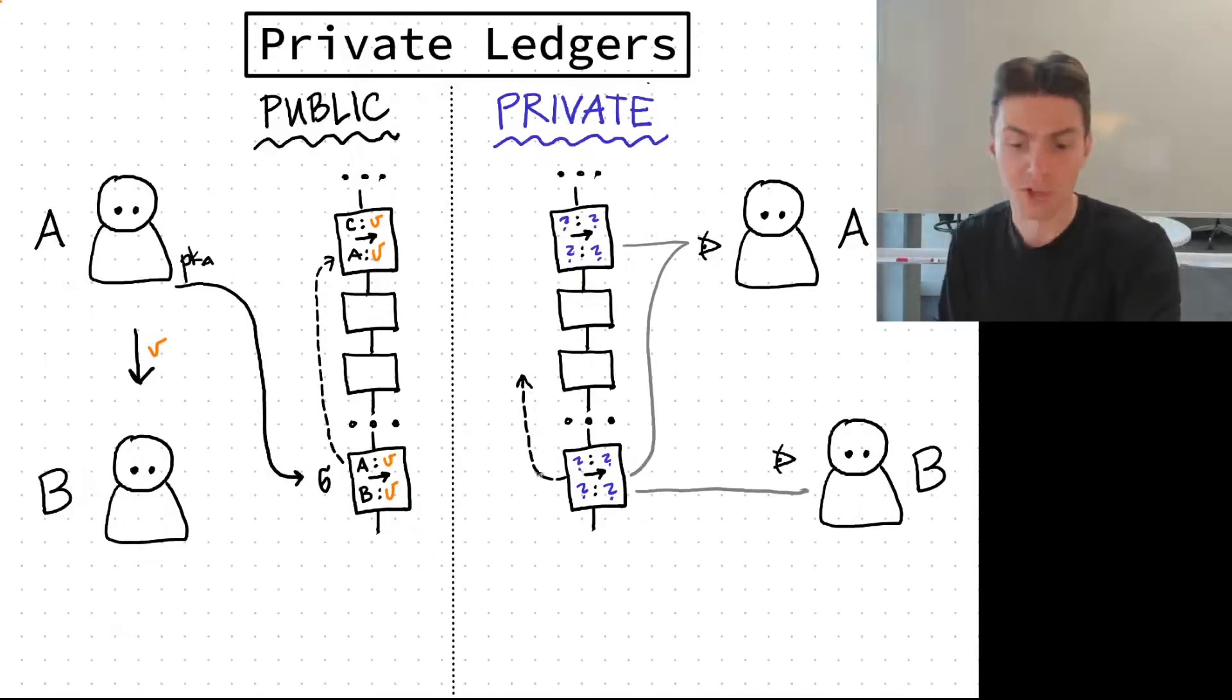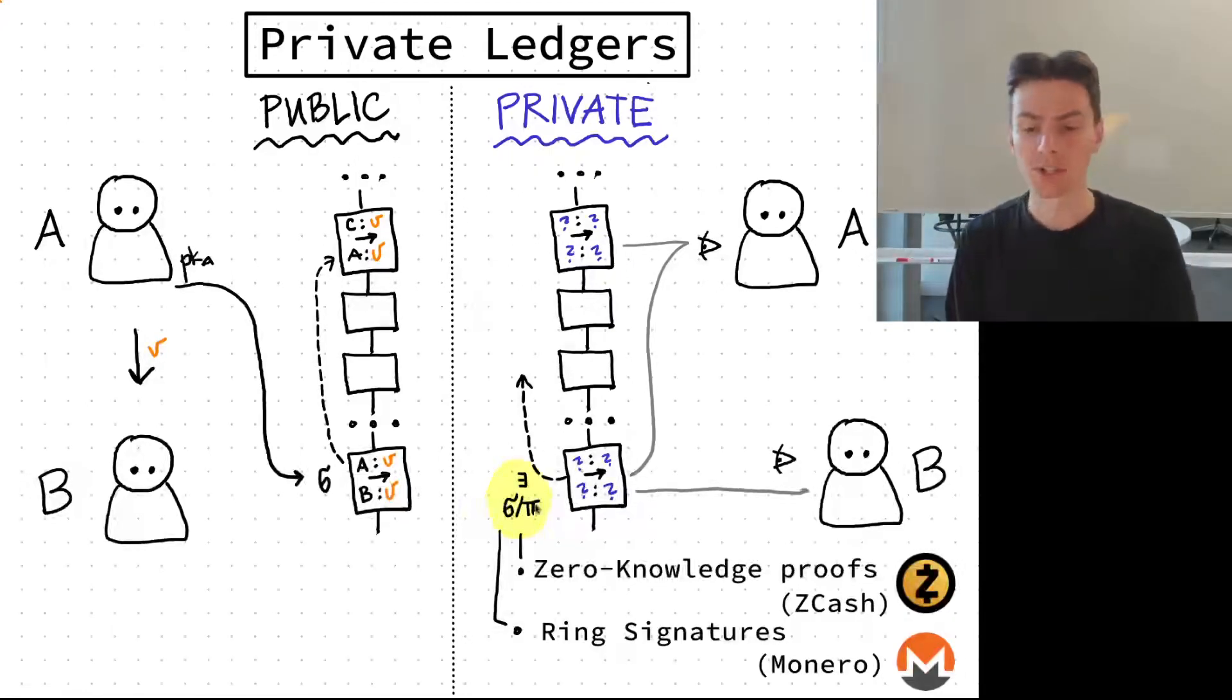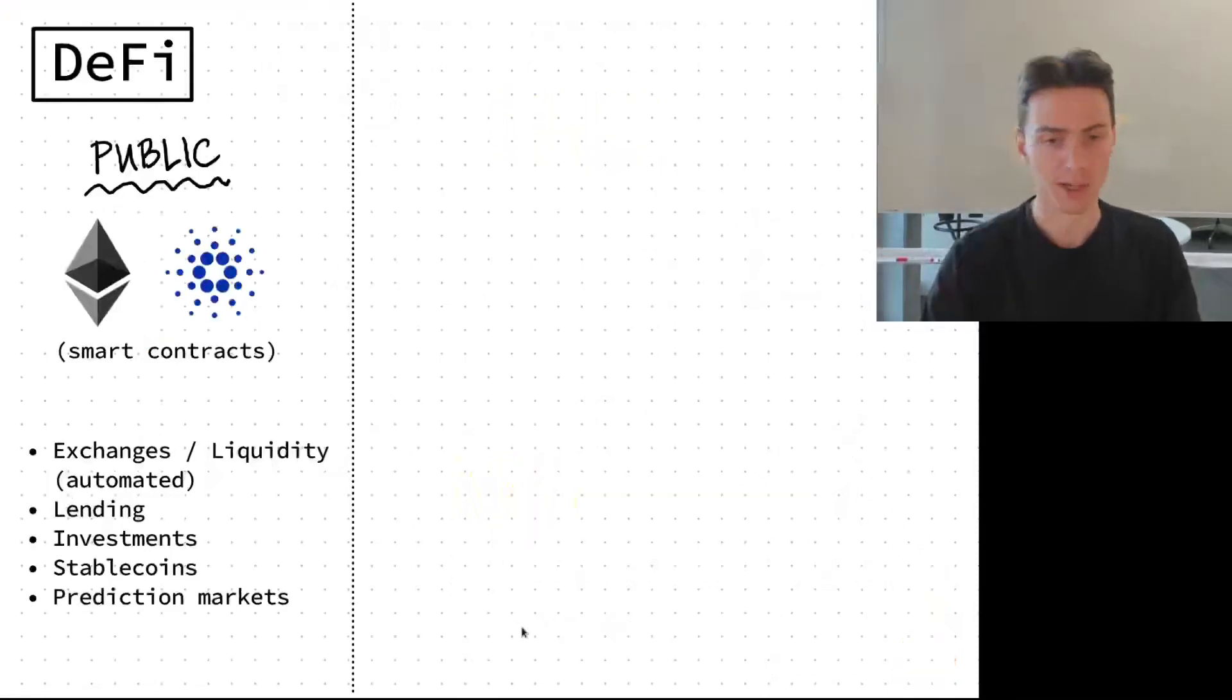To reference the previous transaction you need to attach some kind of a proof or signature, a zero knowledge proof in case of Zcash or a ring signature in case of Monero, which will hide the way money was flowing into the last account.